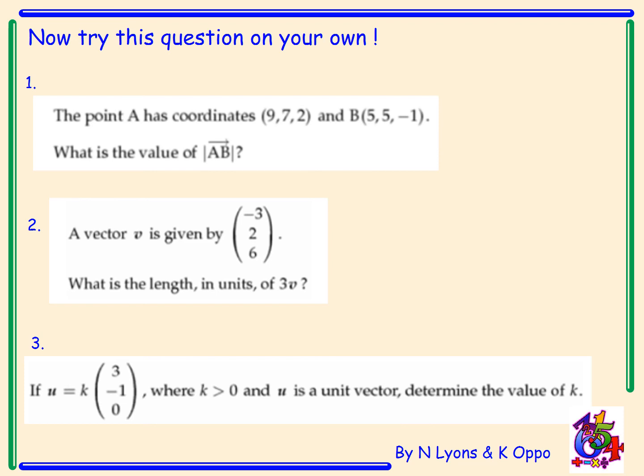Okay, hopefully you're ready to go over your answers. The answer for question 1, the point A has coordinates 9, 7, 2, and B, 5, 5, minus 1. What's the value of the magnitude of the vector AB? So hopefully you've found what is the vector AB to start off with before you're then calculating the magnitude of that vector AB. And the answer for number 1 is root 29.